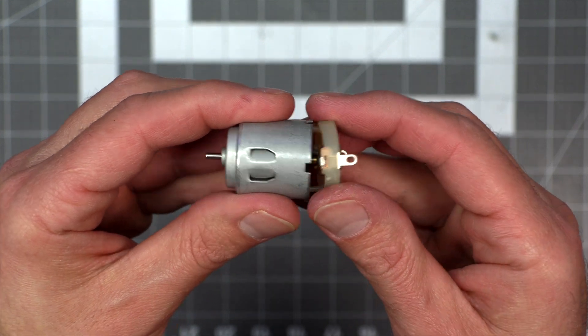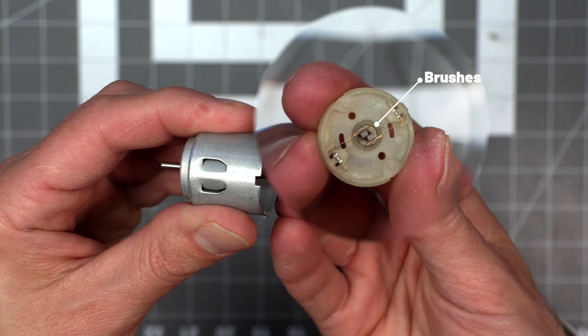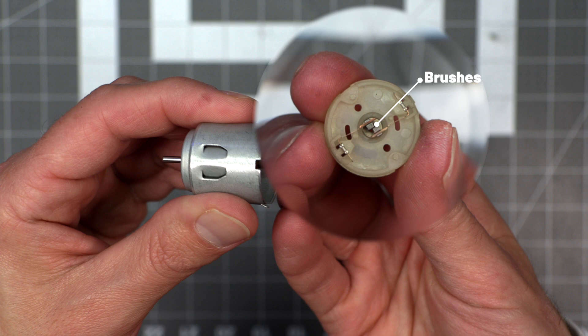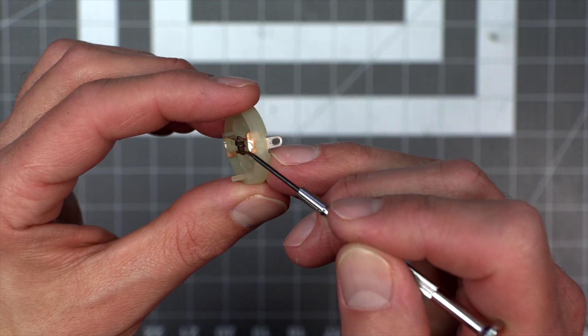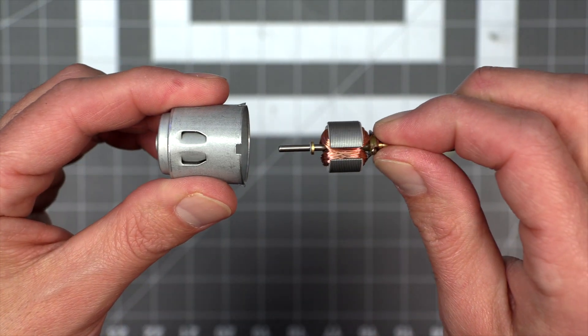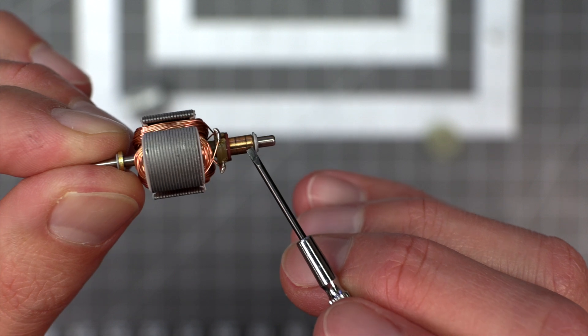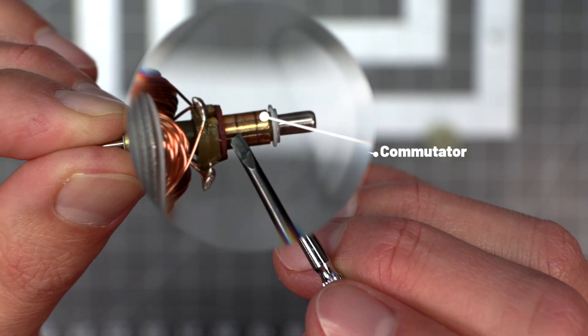When you pull off the back, you'll see the two brushes, which are attached to two strips of copper that act as springs, and push the brushes against the commutator. And those strips of copper are attached to the terminals that the battery gets connected to. Then you can pull out the rotor, which has the commutator and armatures with windings on them. Here is the commutator. You can see the gaps in the commutator.